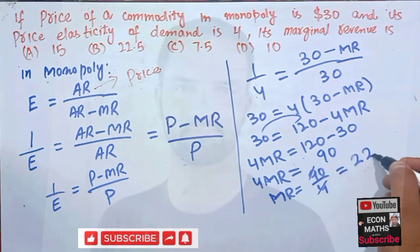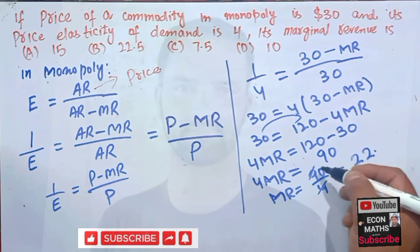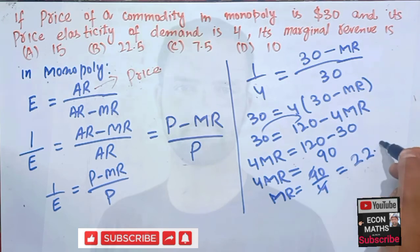What is 90 divided by 4? Four twos are 8, 1 is left, this becomes 10. Four twos are 8 again, 2 is left so we have the decimal point here, then 2 becomes 20, so four fives are 20. That means our marginal revenue would be 22.5.